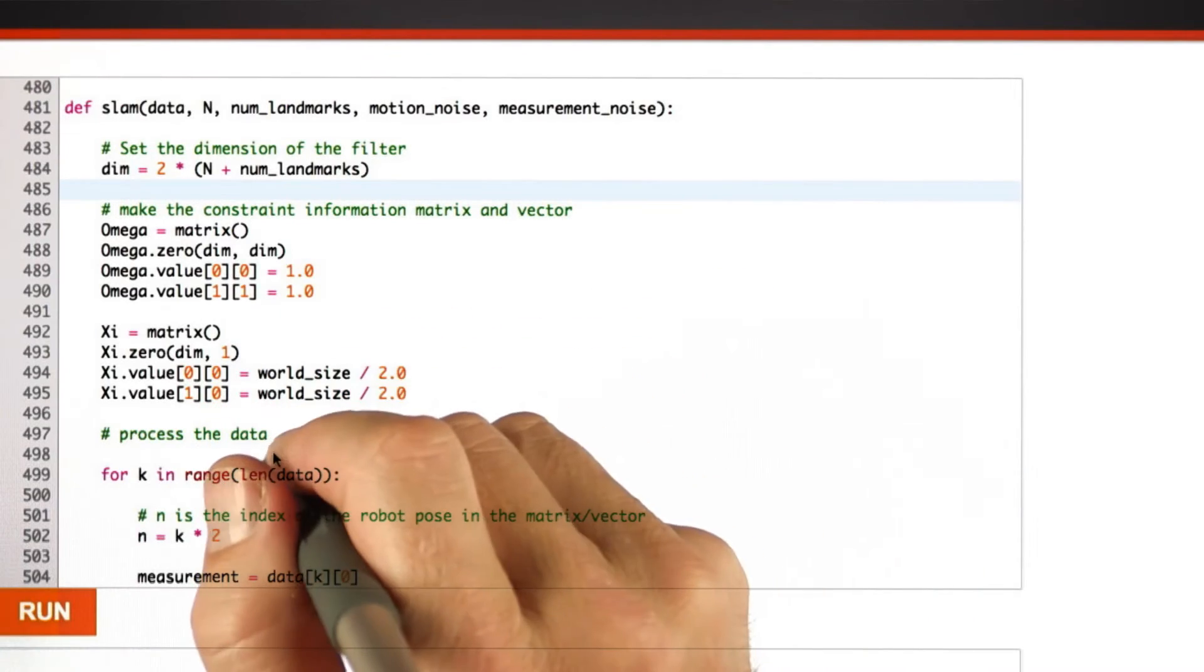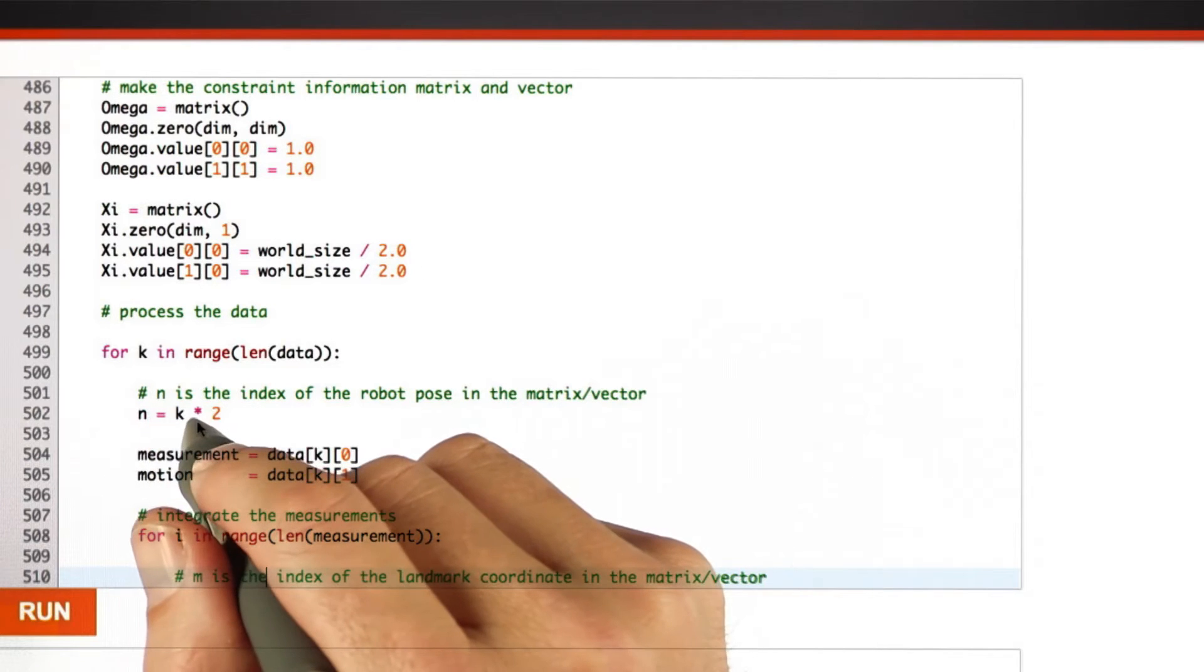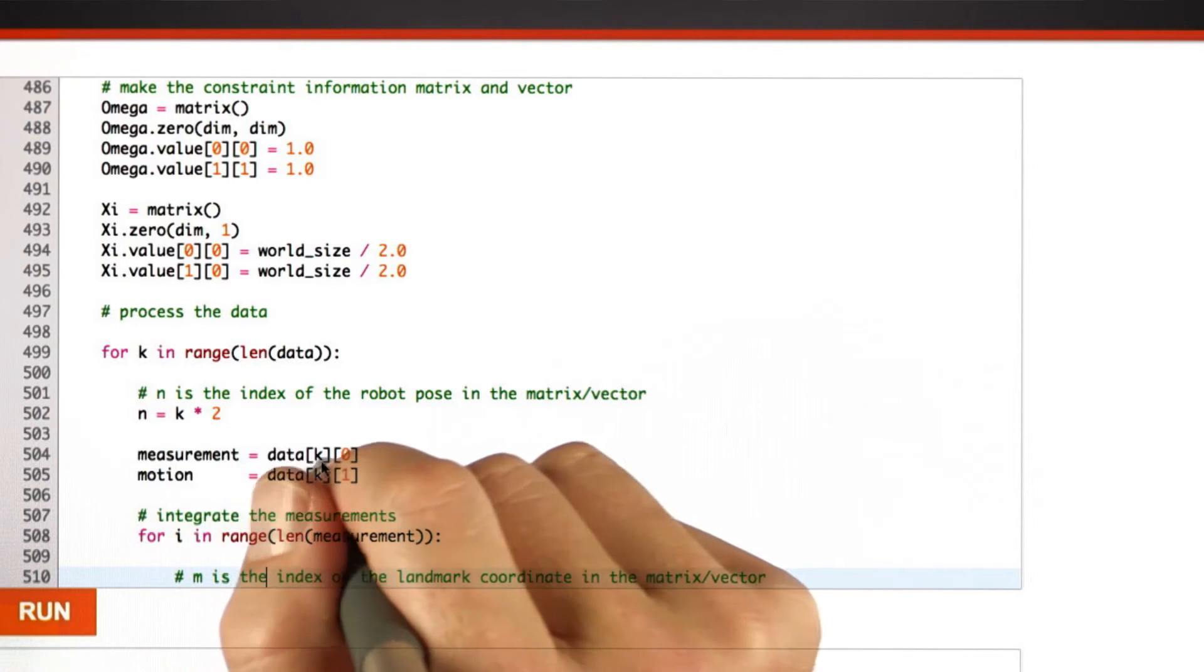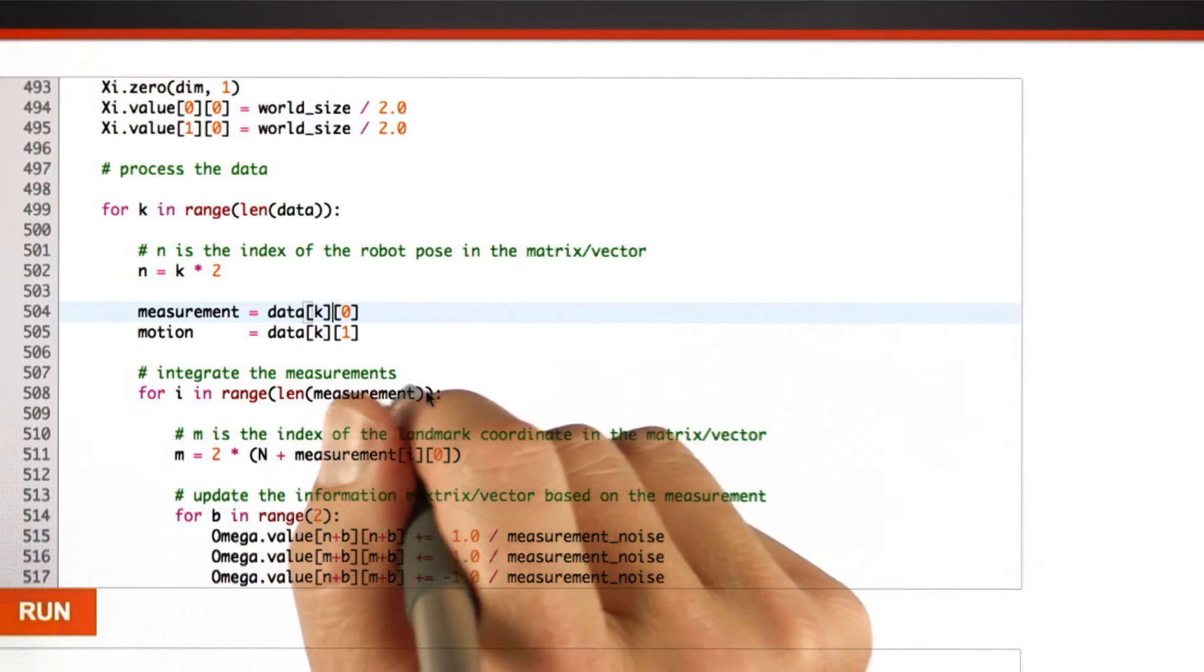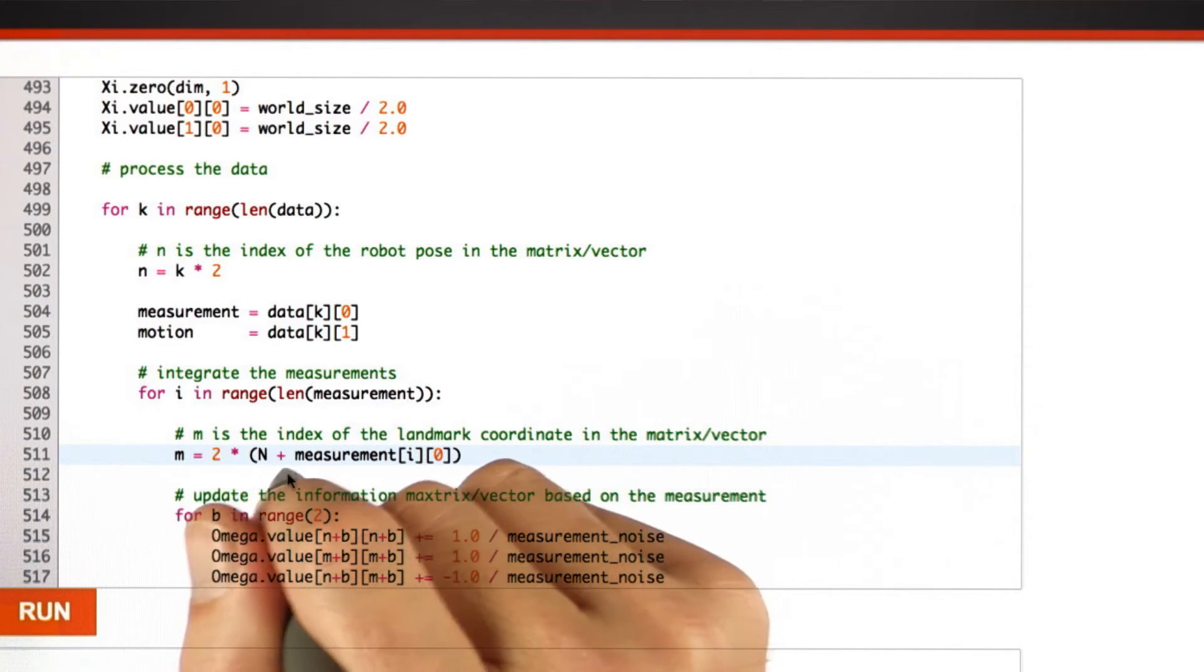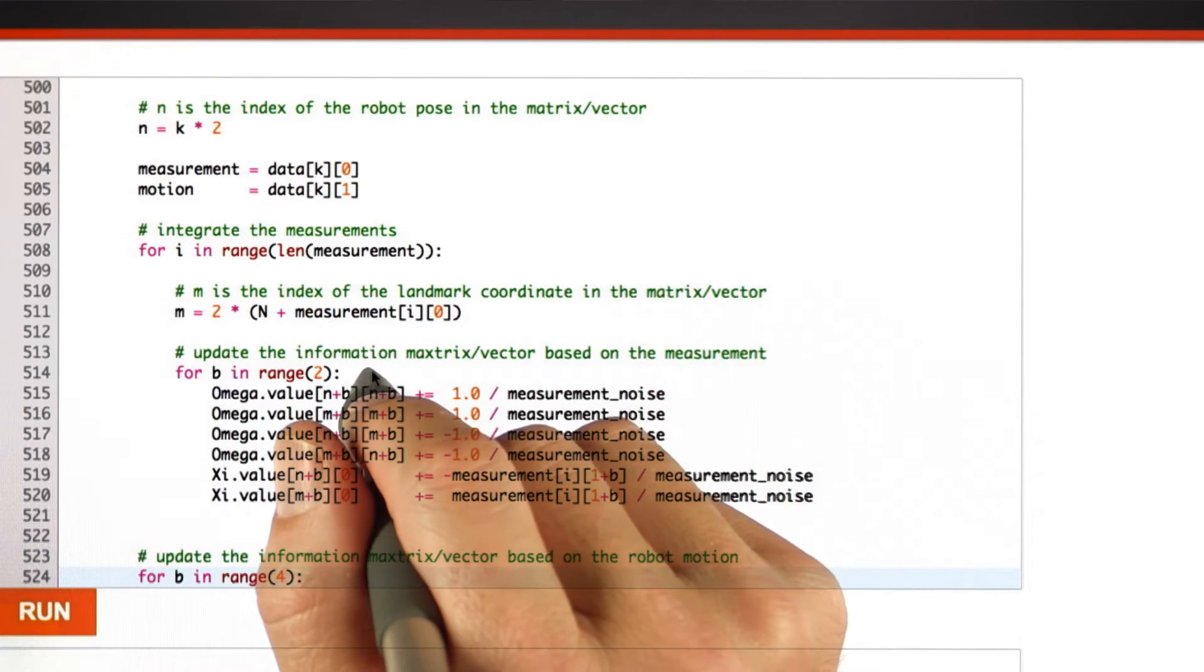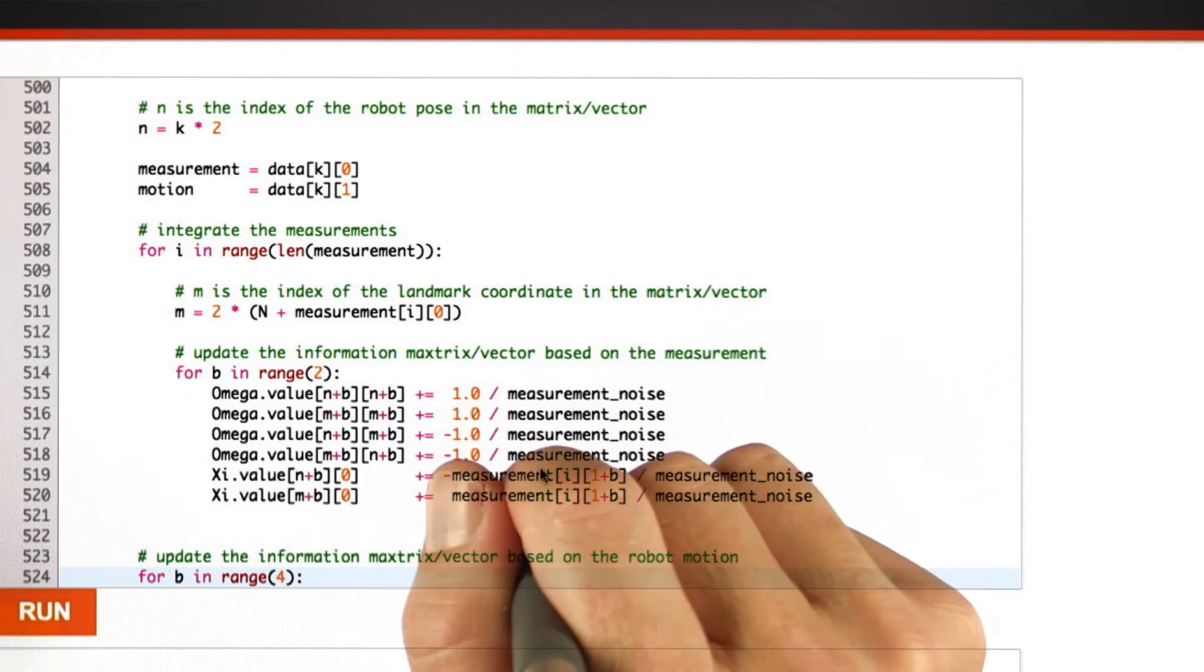Coming back to my example, I now process the data. I go through all the data items. And my path index is now the data item times 2, which is the x, y thing. I extract my measurements from the data, my motion from the data, using this command over here. And then I go through all the measurements, of which there are multiple ones. I find the index in my matrix of the measurement, which is the path plus the measurement index, times 2 because we have x and y's again.